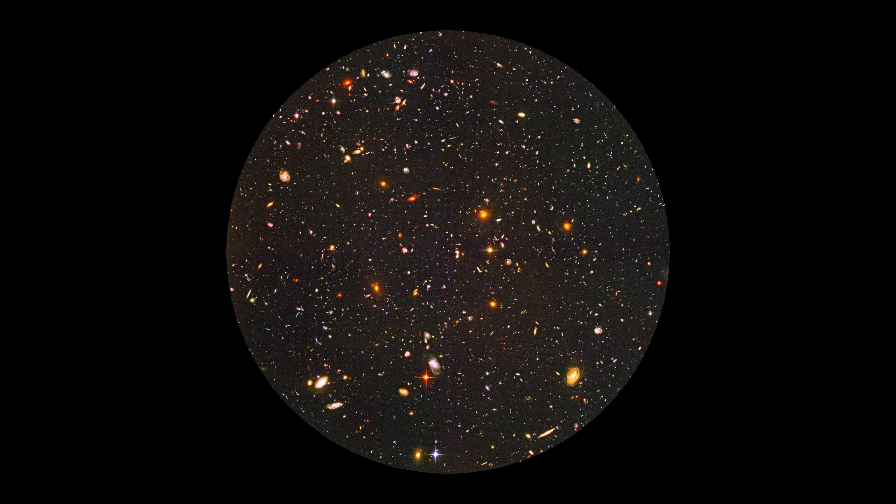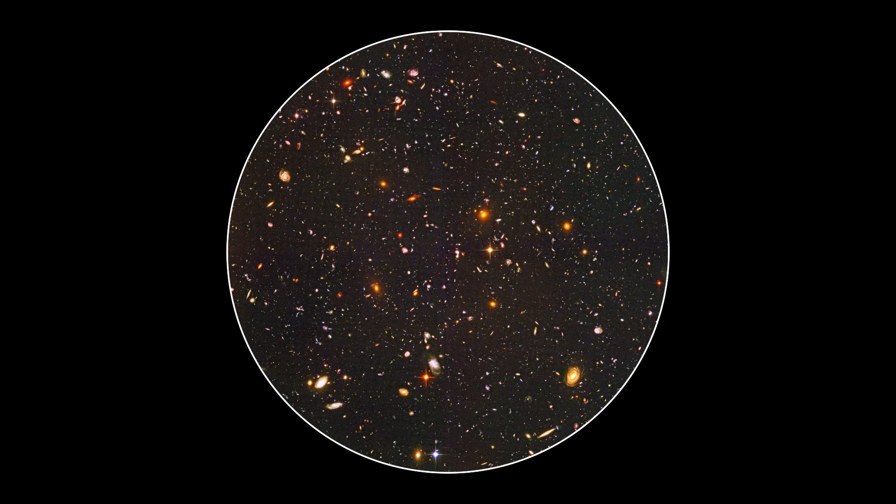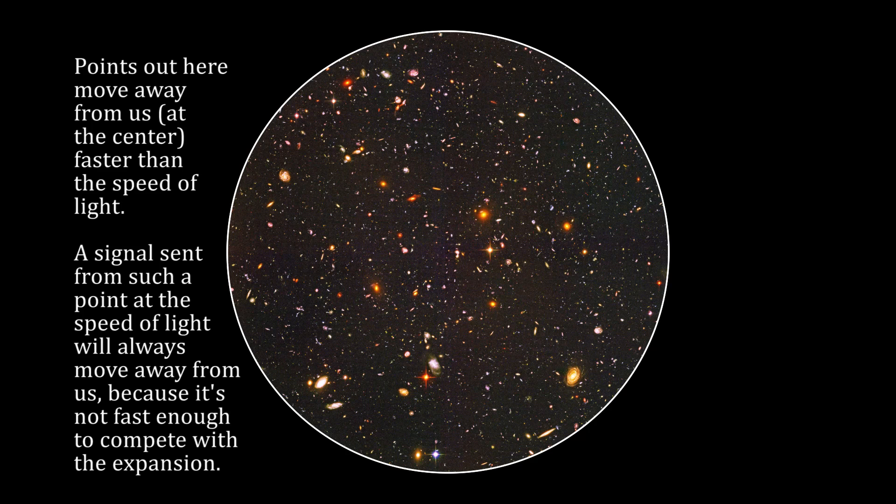A related problem is the particle horizon. This is currently located about 47 billion light years away from us, and past that, nothing can ever be observed. Points beyond that horizon have always, or at least since the beginning of cosmic inflation, been receding from us faster than c, so this marks the absolute boundary of the observable universe.